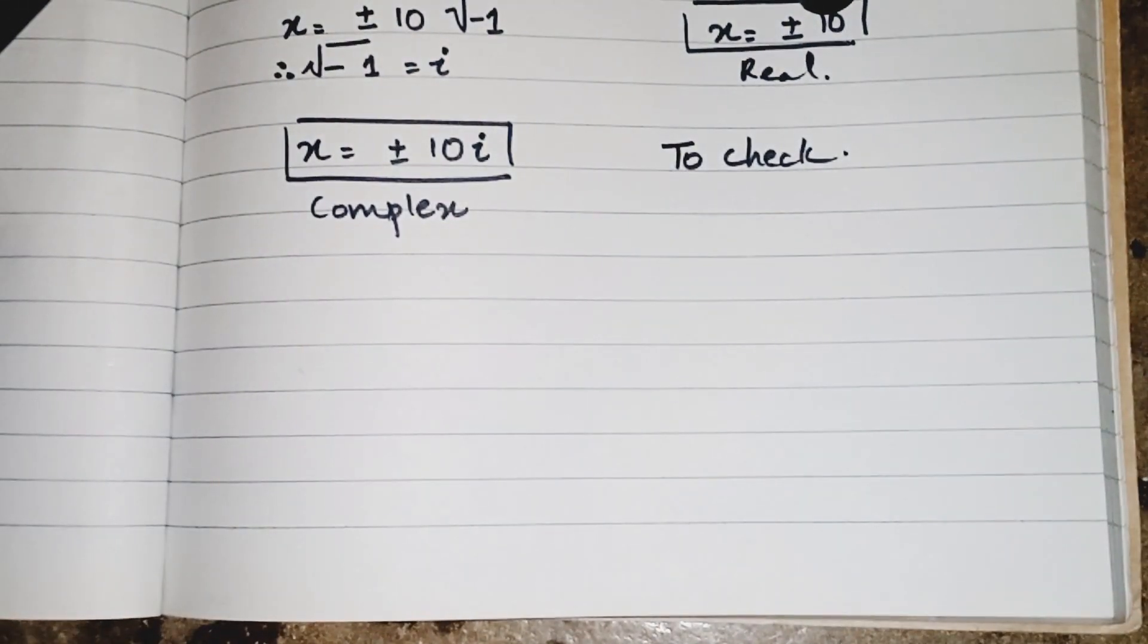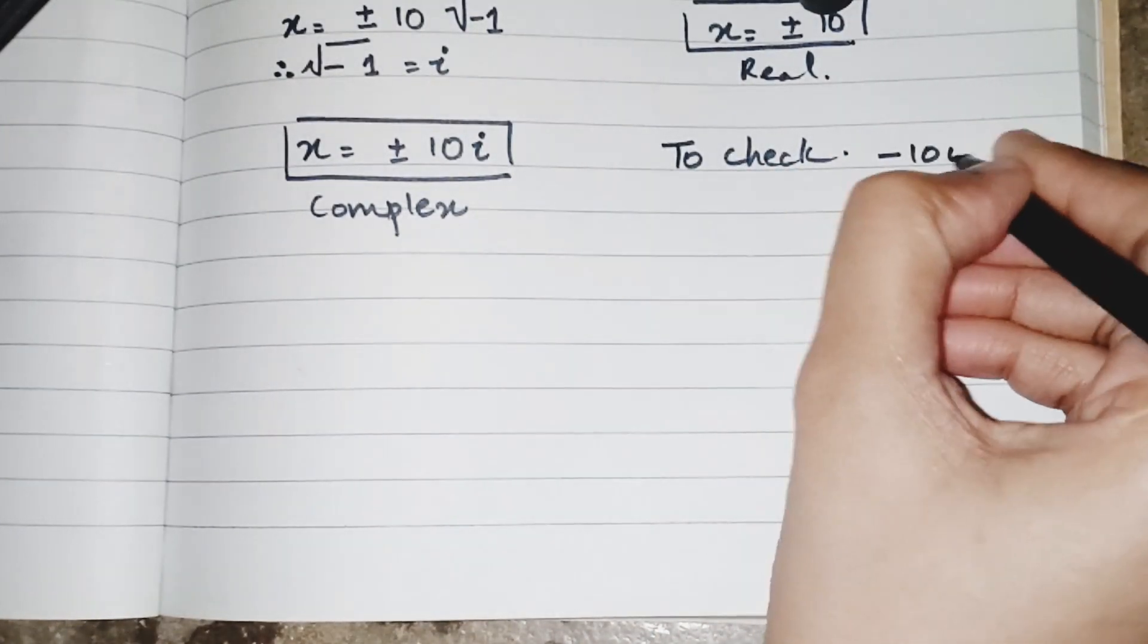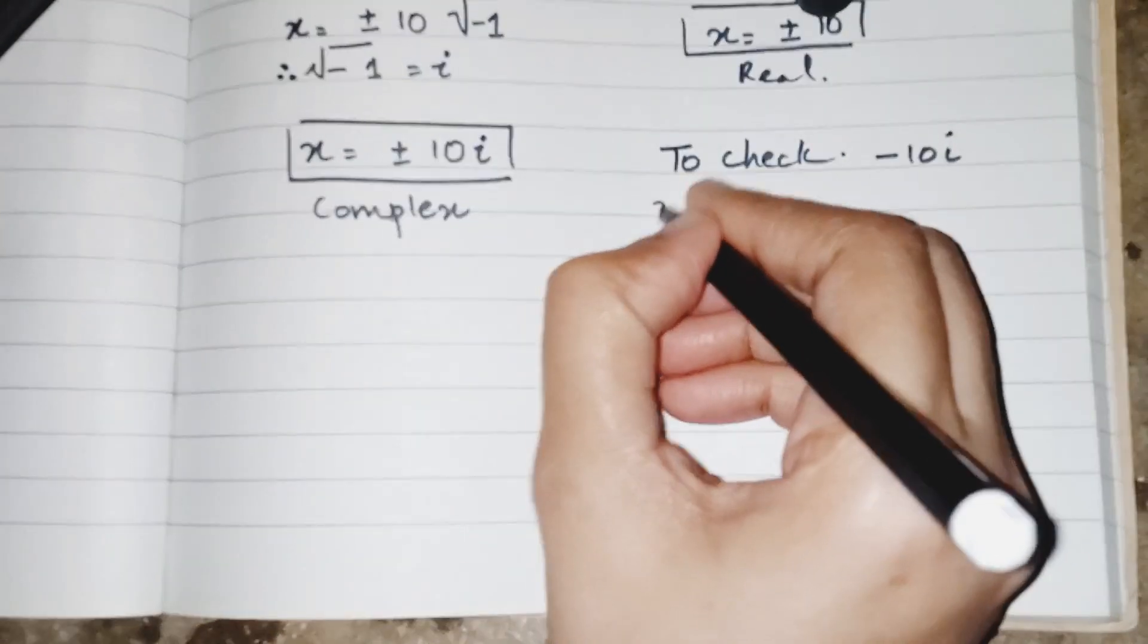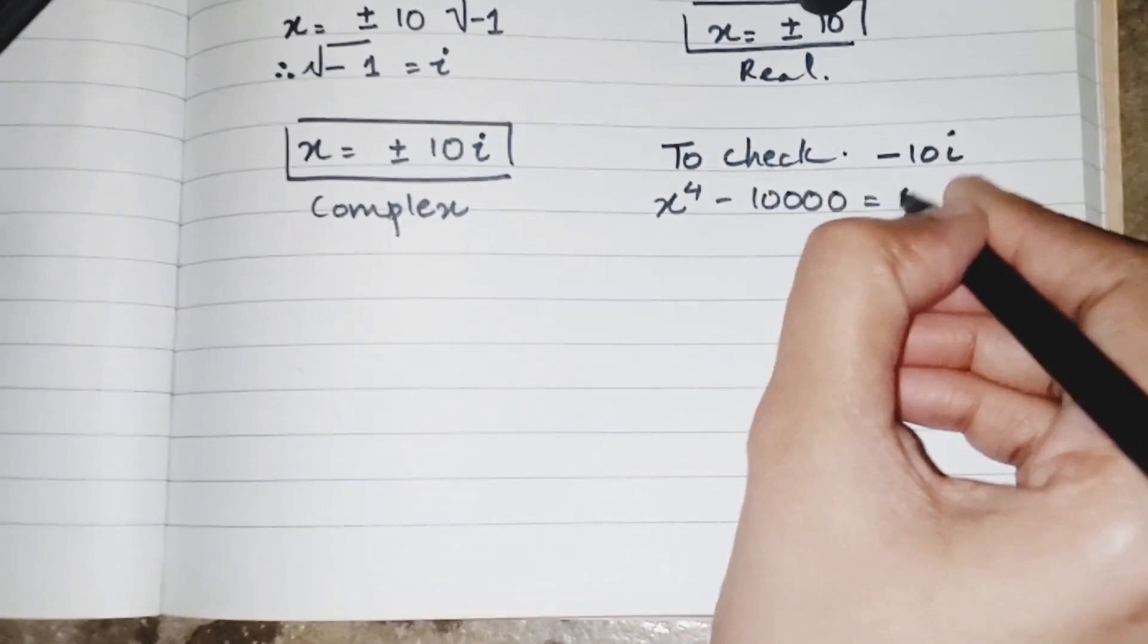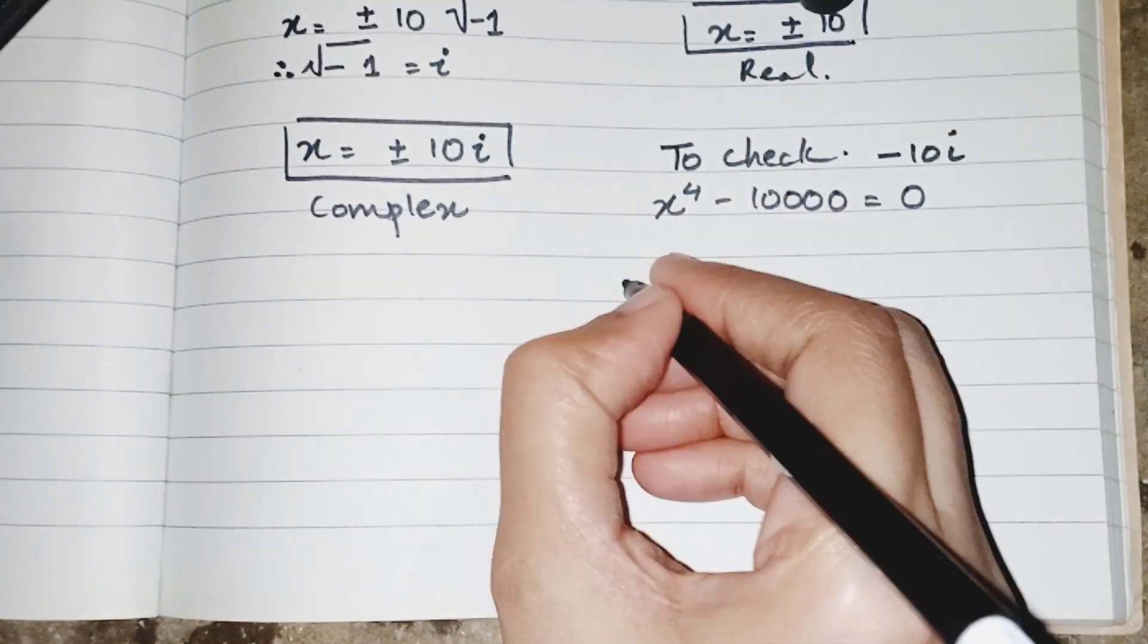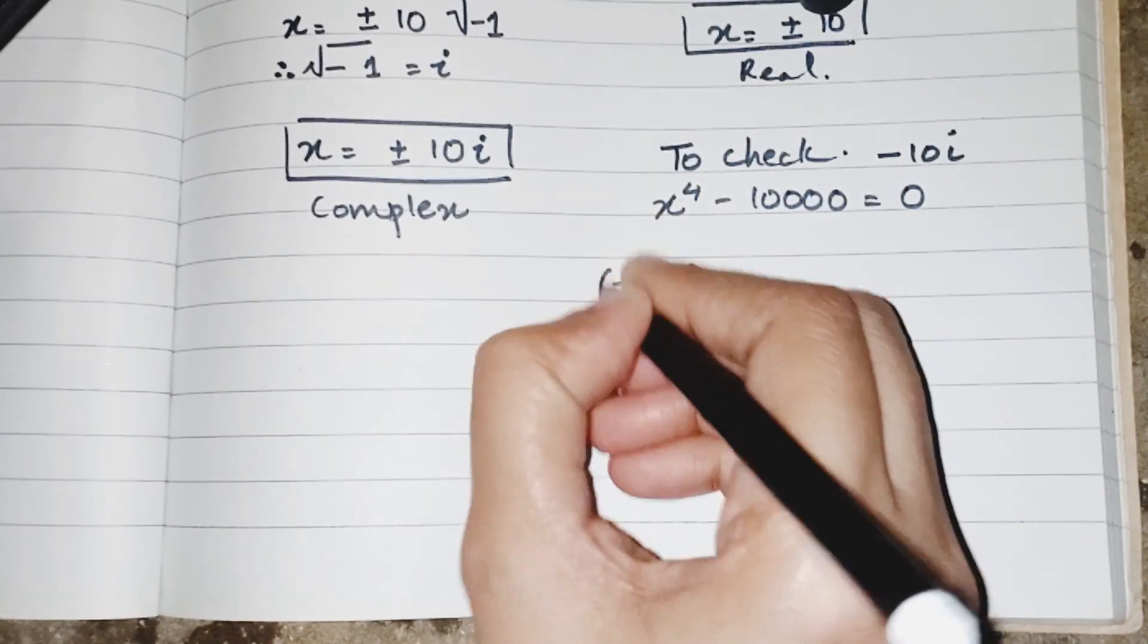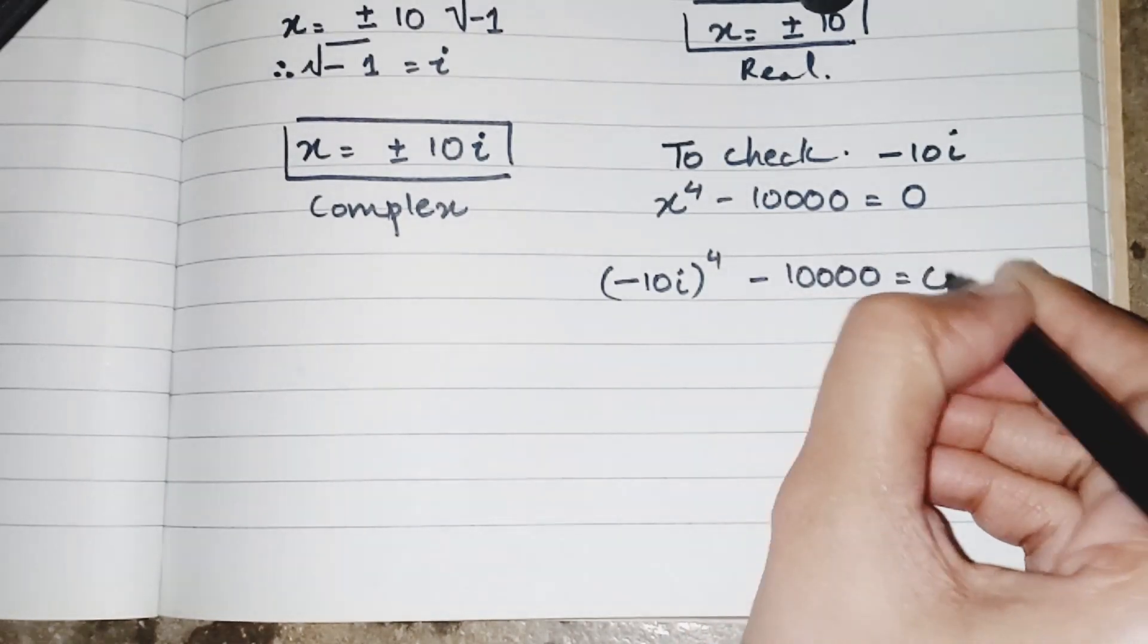To check it, I will write, I am taking the value minus 10 iota. So I have x to the 4 minus 10,000 equals 0. In place of x I have to write minus 10 iota to the power 4 minus 10,000 equals 0.